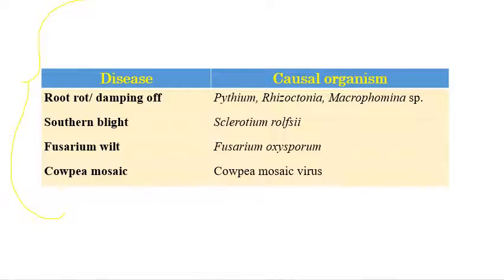Root rot or damping off is caused by species of Pythium, Rhizoctonia, and Macrophomina. Southern blight is caused by Sclerotium rolfsii. Fusarium wilt is caused by Fusarium oxysporum in cowpea.